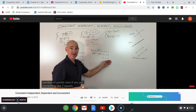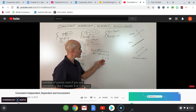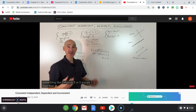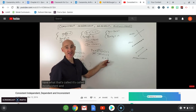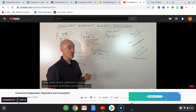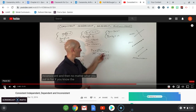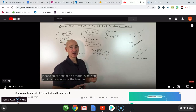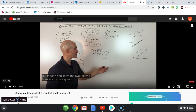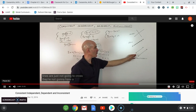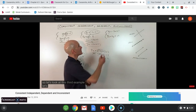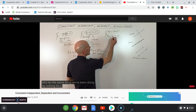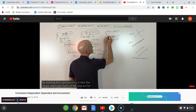Now, if you got something like 2 equals 3 or 0 equals 5, that doesn't make any sense. That's called inconsistent — no matter what you put in for x, the two lines are just not going to cross. So let's look at this third example. Let's solve for y and put it into slope-intercept form, subtracting the 9x from both sides.